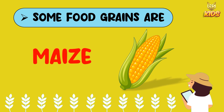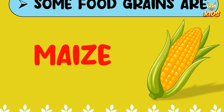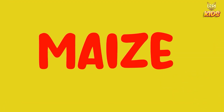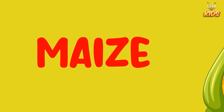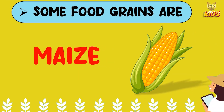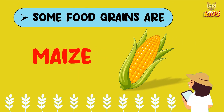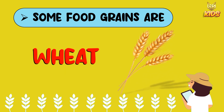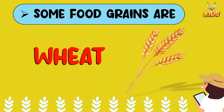Maize. This is called maize — M-A-I-Z-E. This is a maize. And the next is wheat. This is called wheat.